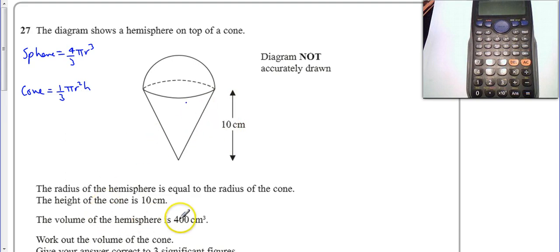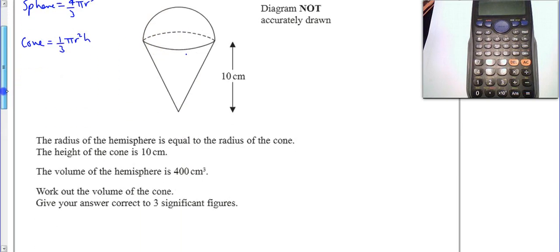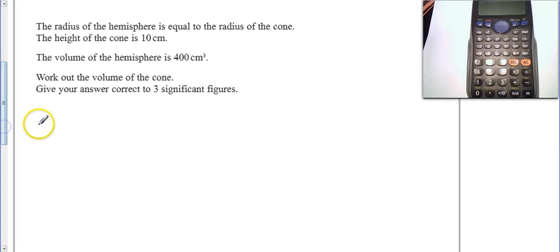Now we're told the volume of the hemisphere is 400. So the volume of the hemisphere at the top is 400. Presumably, if we double that, that would be the volume of the total sphere. So that means 800 equals 4/3 π r³.